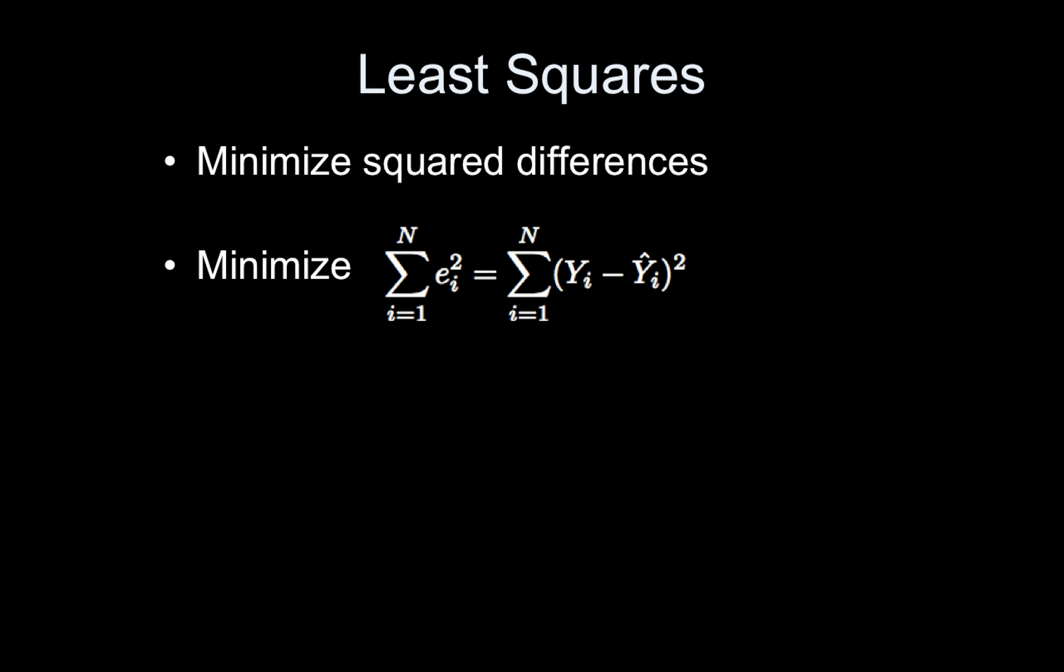Well it turns out we use least squares, which is minimizing the squared distance differences. So minimizing Ei squared, summed over all subjects, which is equivalent to this expression here. Yi minus Yi hat, quantity squared, summed over all subjects. So that's our goal. We're going to minimize this.